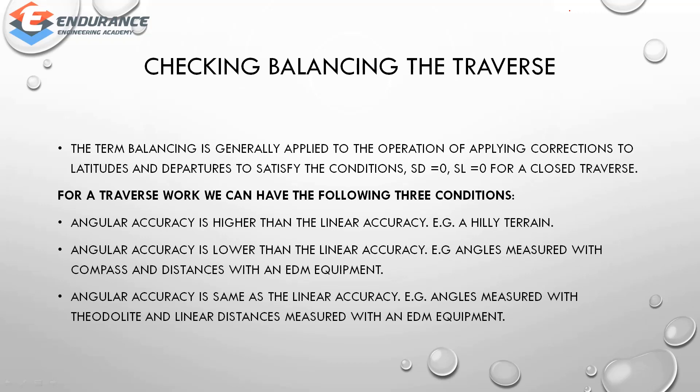The three conditions are: first, angular accuracy is higher than linear accuracy; second, angular accuracy is lower than linear accuracy — for example, when angles are measured with a compass and distances with EDM equipment; and third, angular accuracy is the same as linear accuracy — for example, when angles are measured with a theodolite and distances with EDM equipment.